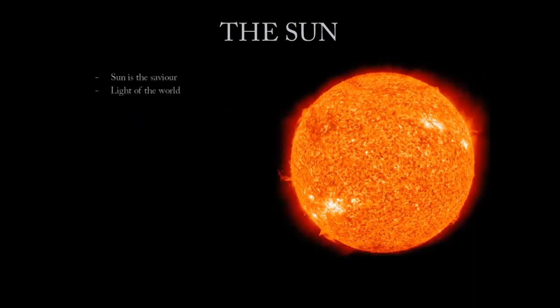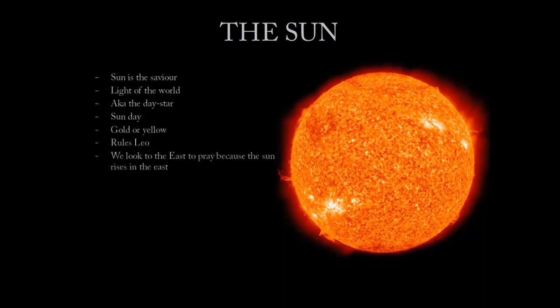We start with the Sun. The Sun is the Savior, the light of the world, also known as the day star. His day of worship is Sunday — hence we get the word Sunday from that. Many religions hold Sunday as the holy day. Its colors are golden yellow, it rules Leo, and we look to the east when we pray because the Sun rises in the east. The Sun is actually the first deity worshipped by man — it would come out and save man from darkness.